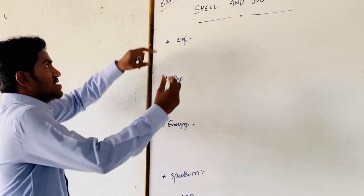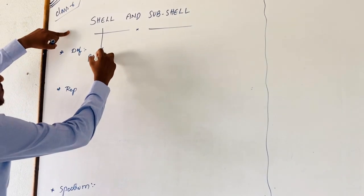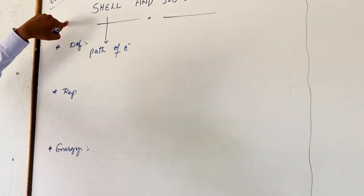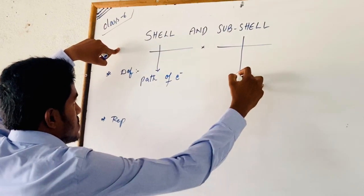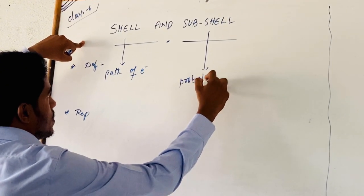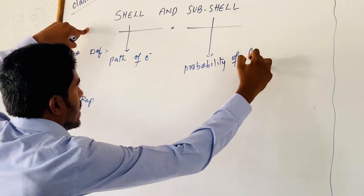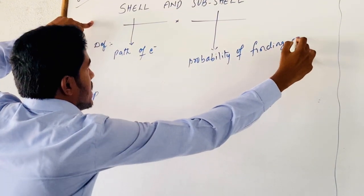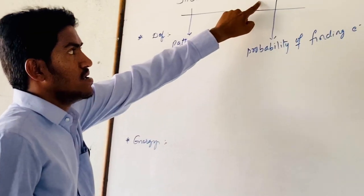For a basic introduction: the shell represents the path of an electron that revolves around the nucleus. Subshell represents the probability of finding an electron around the nucleus is maximum — that region is known as the subshell.